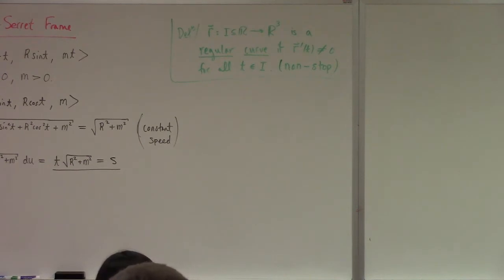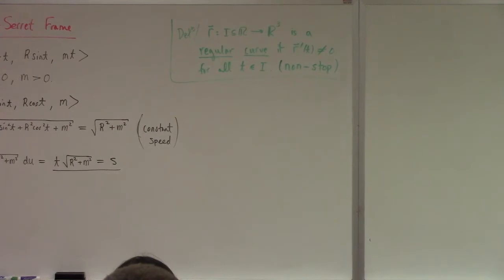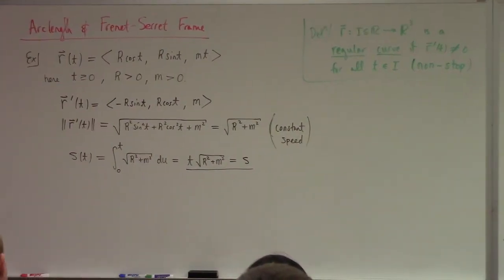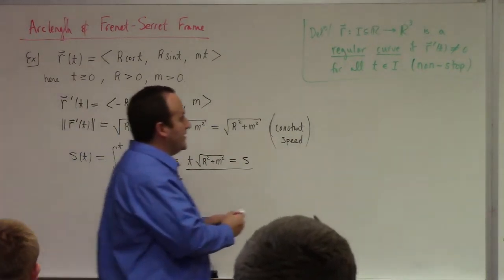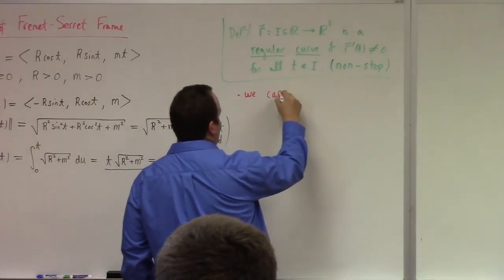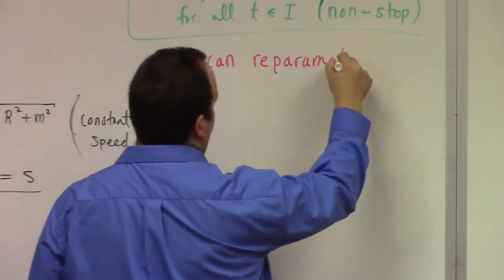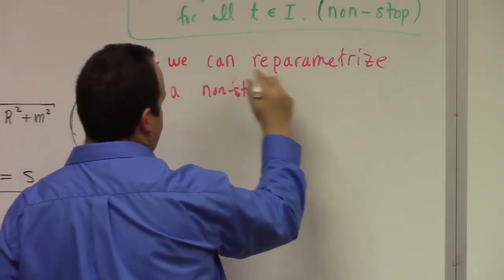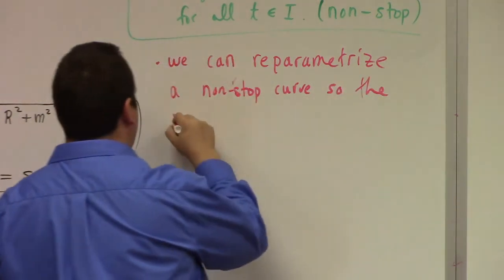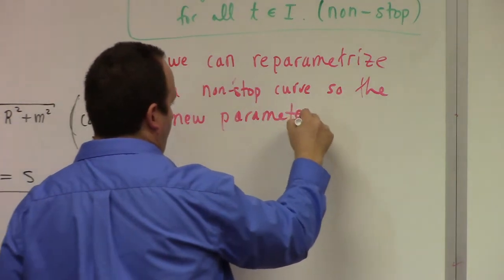Any non-stop curve — because, as we learned yesterday, the arc length is always increasing for a non-stop curve, which means it's invertible — means I can solve for T in terms of the arc length. In other words, I can take the parametrization I have and switch it to a so-called arc length parametrization. Next, we can re-parametrize a non-stop curve so that the new parameter is arc length.